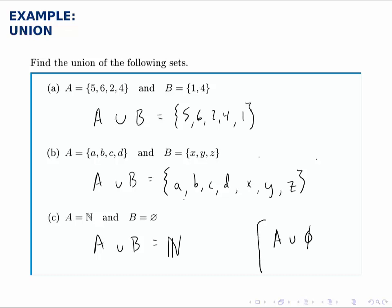A union the empty set, no matter what A is, is always going to be the set you start with. Because when you take the union with the empty set, you're adding nothing to it, so you get back the set you started with.